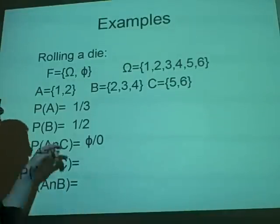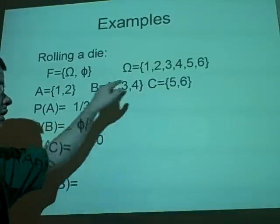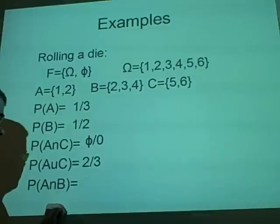Probability of A or C, so it could be A or C, which is 4. It's got 4 elements, divided by 6, which is 2 thirds. This is basic stuff, but some people might have not done it.